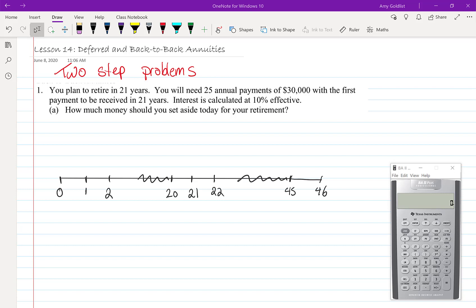You plan to retire in 21 years. You will need 25 annual payments of $30,000 with the first payment to be received in 21 years. Interest is calculated at 10% effective. And this is of course an approximation because interest rates won't stay the same for 46 years, but we usually pretend they will in order to do calculations. Part A: How much money should we set aside for our retirement?